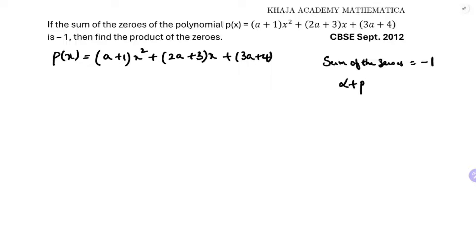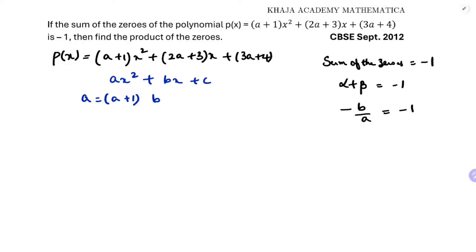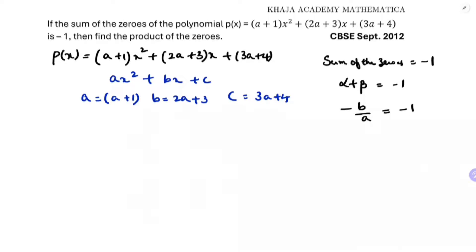So alpha plus beta equals minus 1, and we know alpha plus beta equals minus b by a. Comparing with the standard quadratic equation ax² + bx + c, the value of a is (a+1), b is (2a+3), and c is (3a+4).